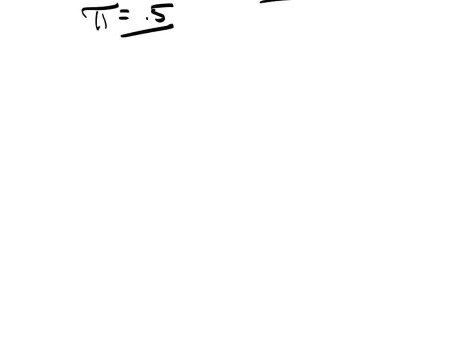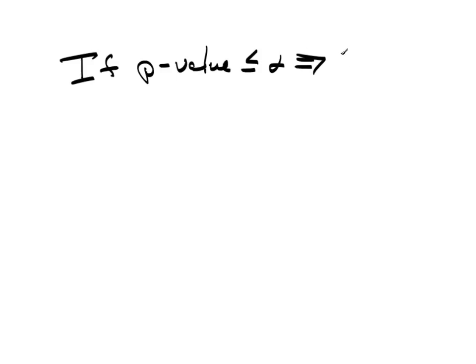Now, just to wrap up the whole thing about alpha again. If the p-value is less than or equal to alpha, then reject. And we say reject, we're always talking about rejecting H-naught. Otherwise, fail to reject.